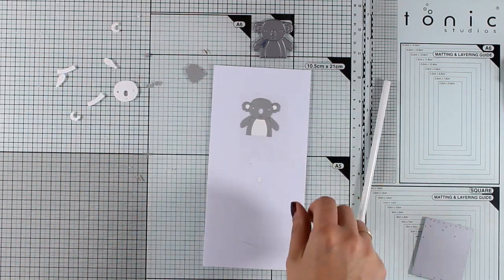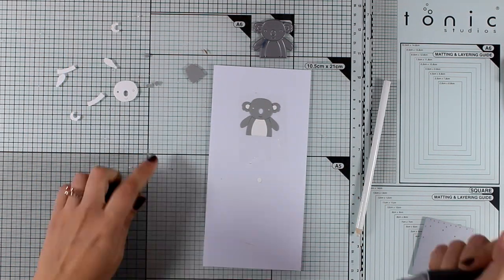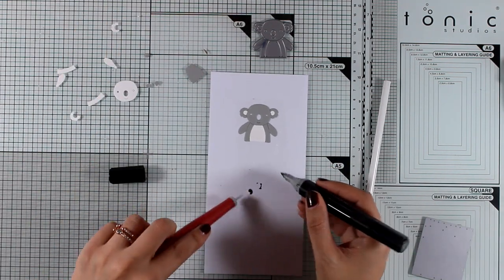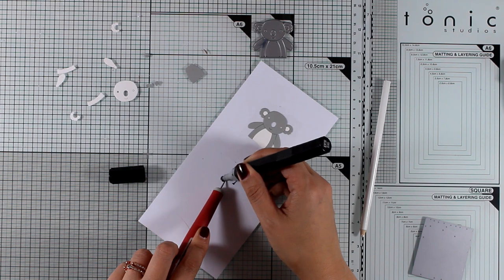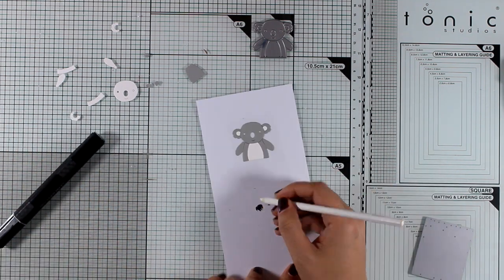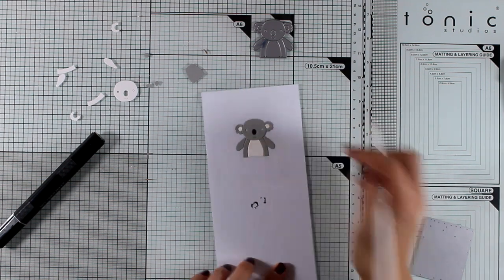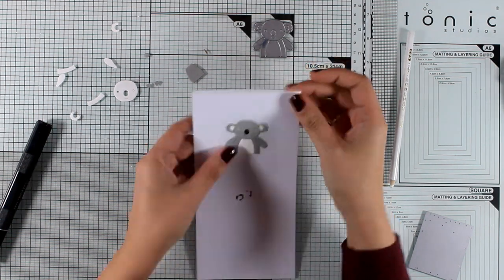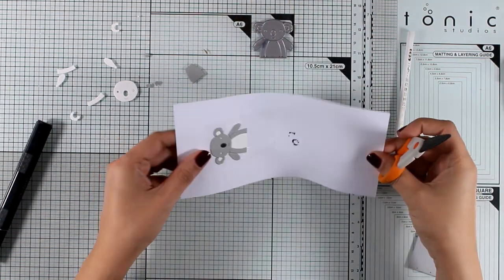As you can see, I have already placed pretty much everything. All that's needed to do is to add the nose and the eyes. Now for the nose, I'm just going to color the white piece with my black marker and just place it there. Now for the eyes, I will not bother with the tiny little pieces. When I finish the card, I'm just going to use my black Nuvo drops to create his eyes, and you will see that later on.